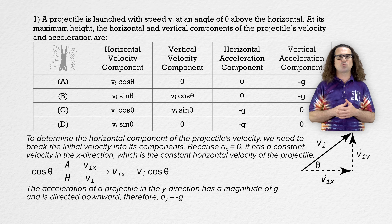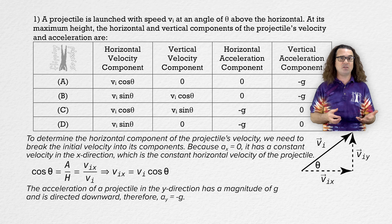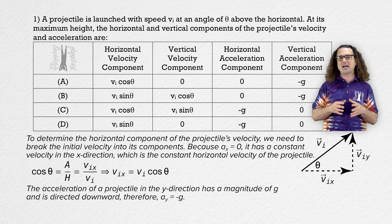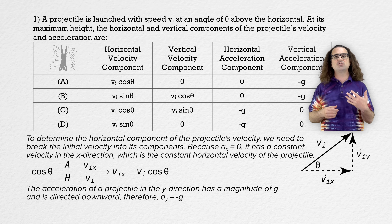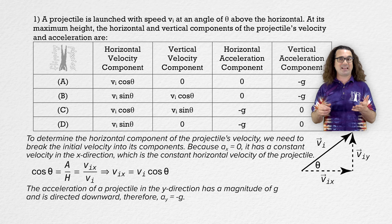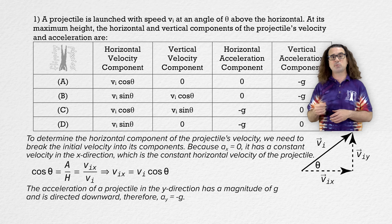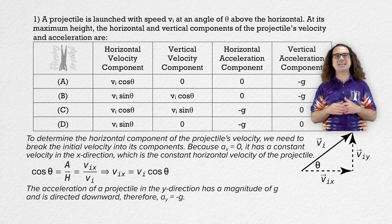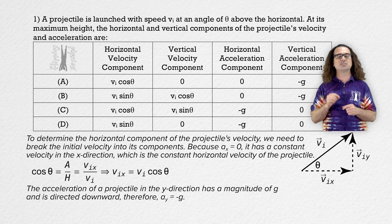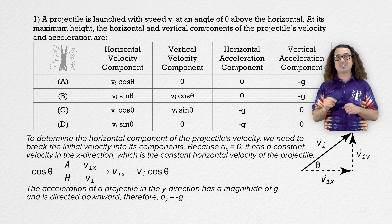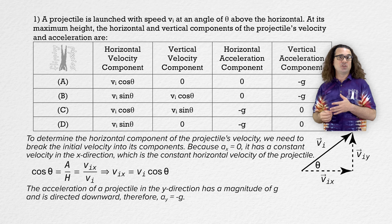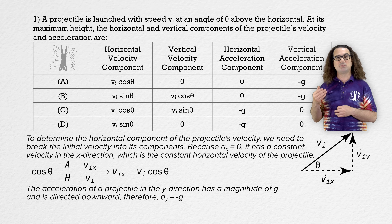Many projectile motion problems will require you to break or resolve the initial velocity vector into its components and recognize that the initial velocity in the x direction continues to be the velocity of the projectile in the x direction throughout projectile motion, because the horizontal acceleration of a projectile is zero, resulting in a constant velocity in the x direction. Once you get to dynamics, you can use a free body diagram and Newton's second law to understand projectile motion.